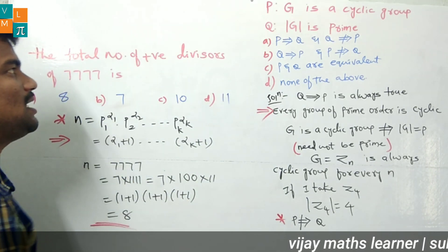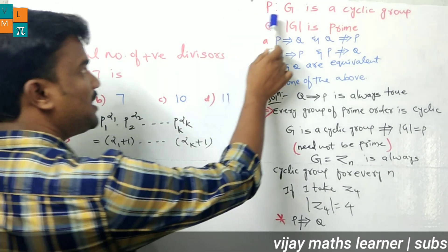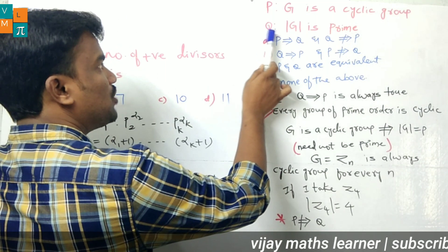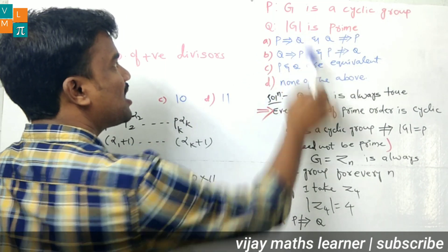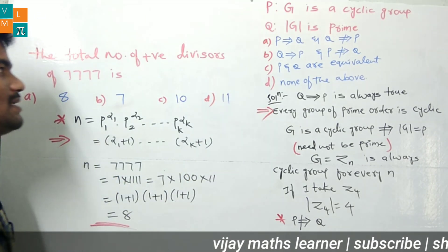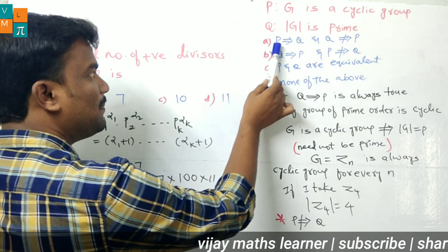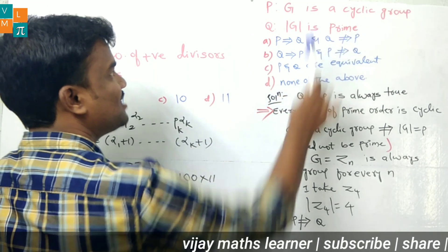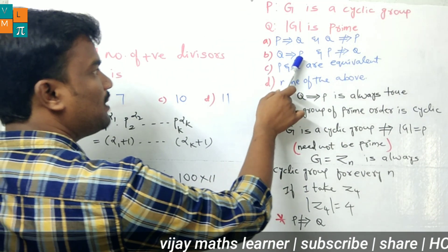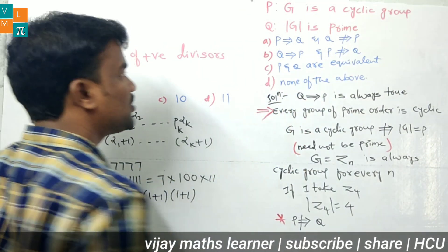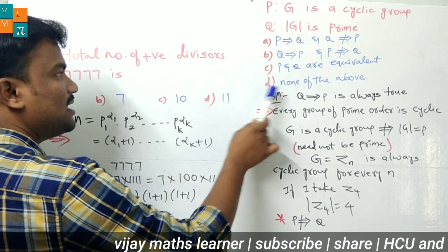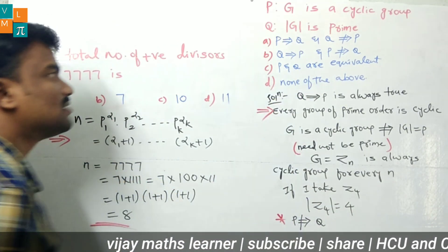The first question has two statements: Statement P — G is a cyclic group, and Statement Q — |G| is prime, meaning the order of the group is prime. We have four options: (A) P implies Q and Q does not imply P; (B) Q implies P and P does not imply Q; (C) P and Q are equivalent; (D) None of these.